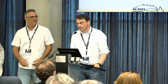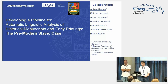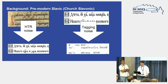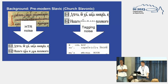We are going to talk about Church Slavonic or pre-modern Slavic. This is a Slavic language with rich morphology and high variation in orthography. We are going to find out if it's possible to combine two types of noise in our data and have a meaningful analysis nevertheless.